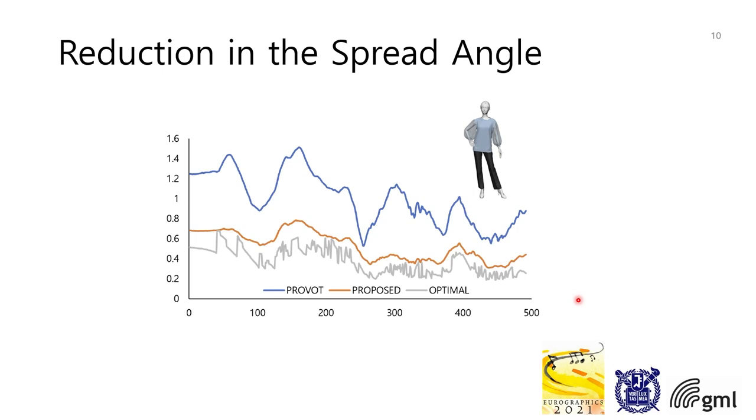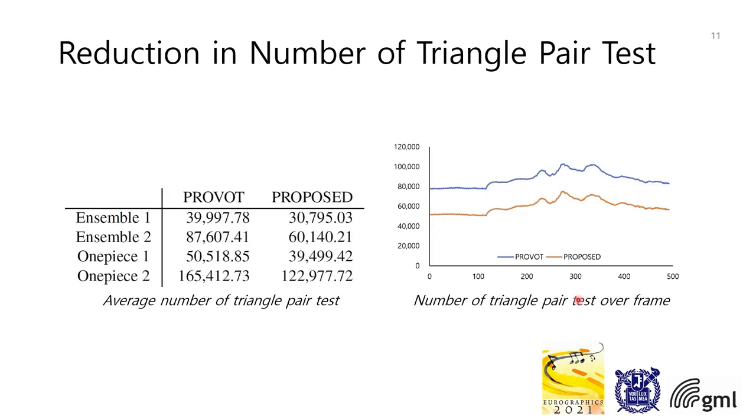Next, let's look at the reduction in number of triangle pair tests. According to the tests, using the proposed method significantly reduces the number of tests compared to the previous method. The reduction rate is on average 25%.